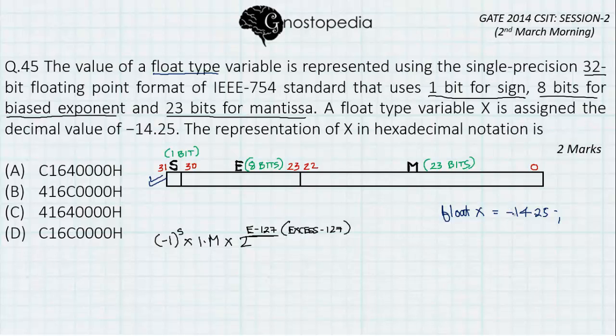Since minus 14.25 is a negative number, the sign bit will always represent 1. And why is that so? Because minus 1 raised to 1 is minus 1, and hence S takes on the value 1. Similarly, if it was a positive number, S would have been 0. Now to proceed further, we need to convert 14.25 into binary.